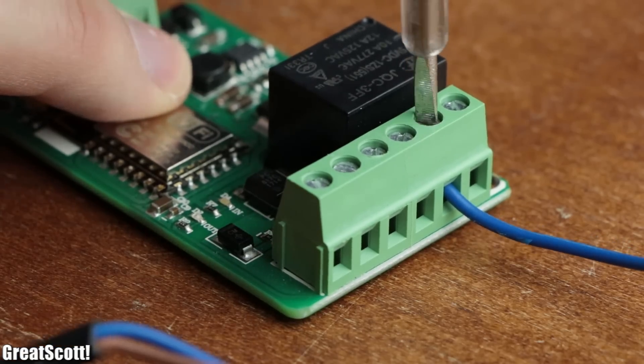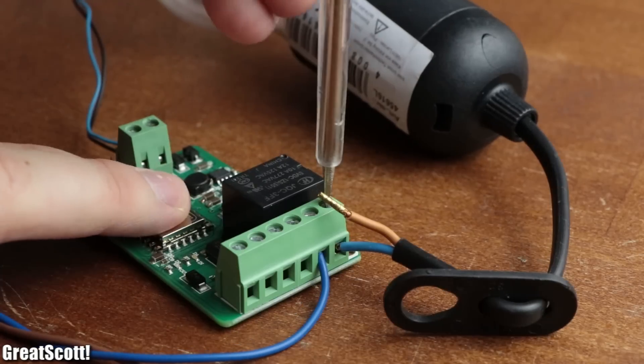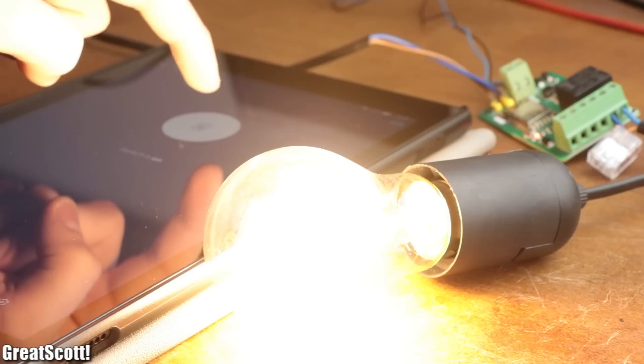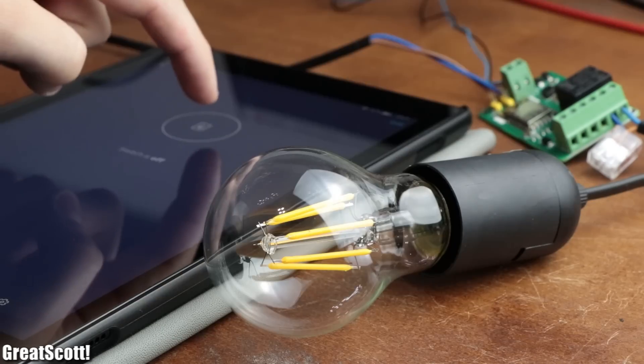That means we could now hook up a lamp or something similar to the relay and call it a day. But I wanted to present you a more practical example of home automation with Alexa.